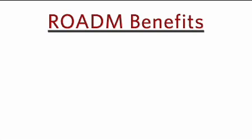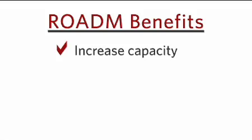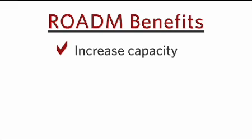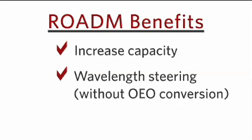So one thing that Rotom does bring to the table is first it increases the capacity. Typical systems are about 30 to 32 channels. Rotom introduced, in our particular case, the highest channel count of 44 channels — so we've increased from 32 channels to 44 channels. The other thing that Rotom allows us to do is deal with different degrees, and in particular wavelength steering between degrees, i.e., taking wavelengths from one fibre span and routing it to another fibre span independently of the other wavelengths. And this is done without electrical conversion, so it provides a very cost-effective manner to groom and steer wavelengths through different degrees or different fibre spans.